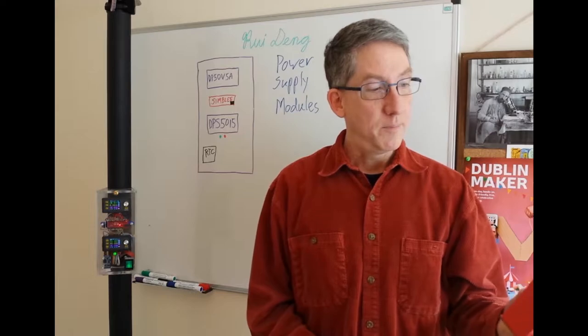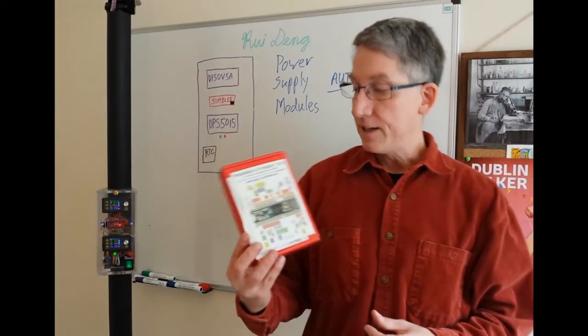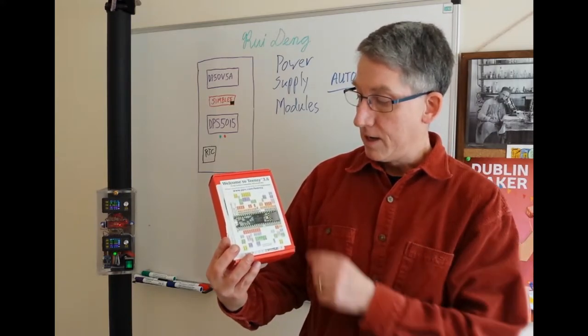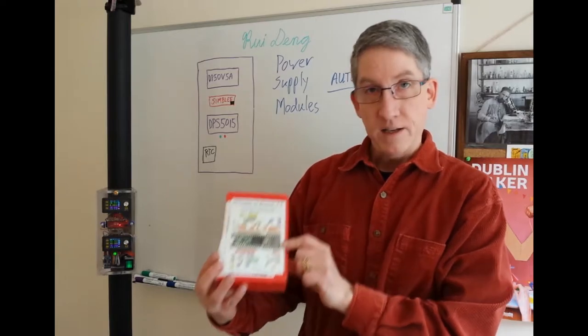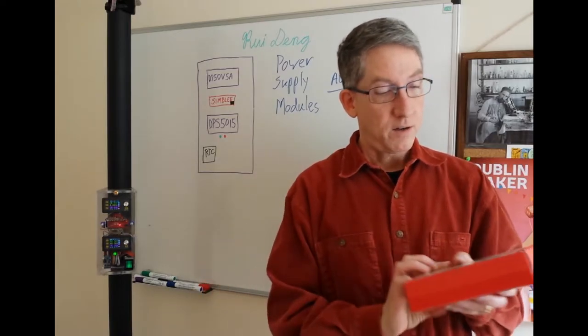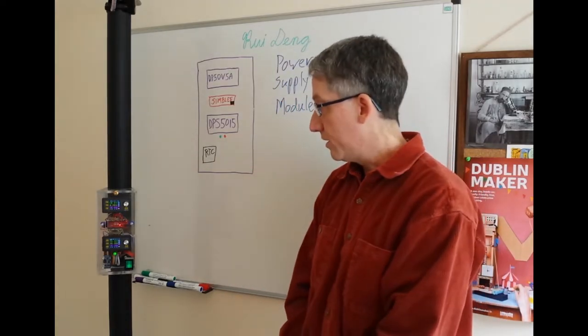However, my favorite Arduino is probably Teensy 3.6. It's got about 60 GPIO lines, an SD card, very fast processor, but it doesn't have Bluetooth or Wi-Fi. So you'd have to add that on as a separate shield of some sort.